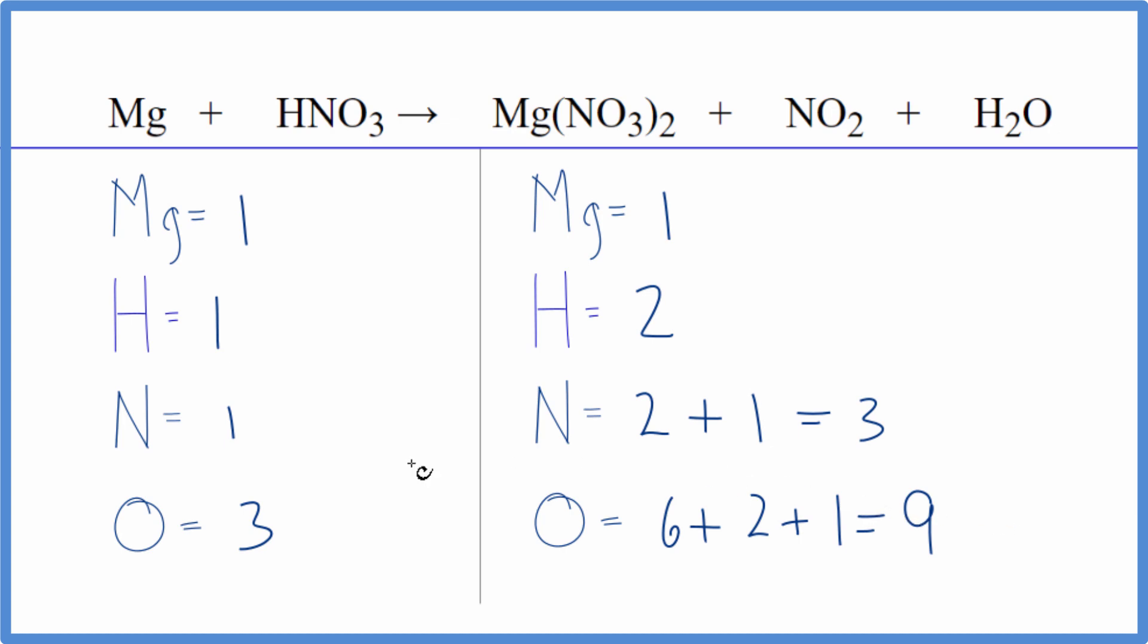When I balance equations, I like to leave the oxygens until last, and then the hydrogens leave those towards the end as well. So let's balance the nitrogen. We have one here and three here. So we could put a three right here.